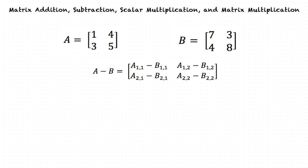We can now insert the values and solve. When we insert our values we get A minus B equal to Row 1: 1 minus 7, 4 minus 3; Row 2: 3 minus 4, and 5 minus 8. Now we can solve. This gives us A minus B equal to Row 1: negative 6, 1; Row 2: negative 1, negative 3. This will be our final answer.